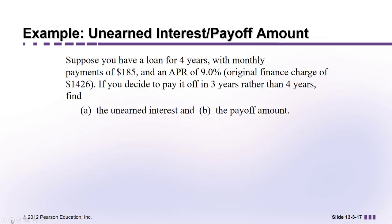Here's an example: suppose you have a loan for four years with monthly payments of $185 and an APR of 9%. The original finance charge, if you kept the loan for the full four years, would be $1,426. If you decide to pay it off in three years rather than four, we'll calculate (a) the unearned interest and (b) the payoff amount — the last payment you have to make.